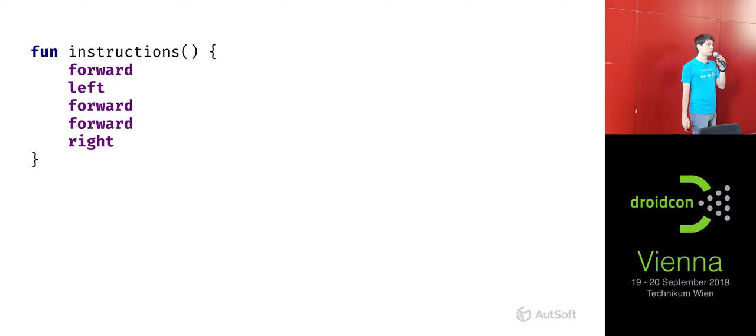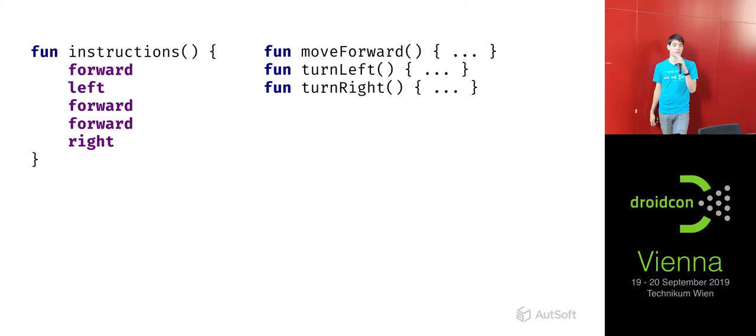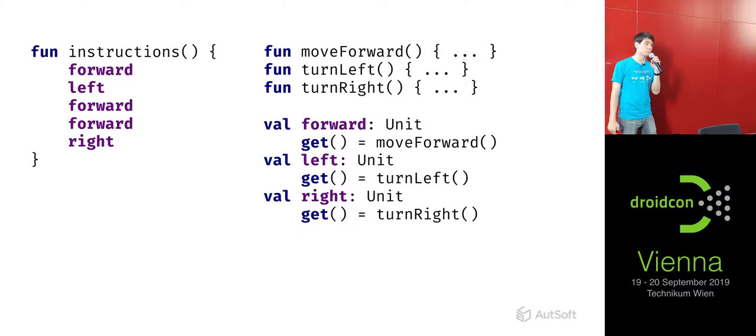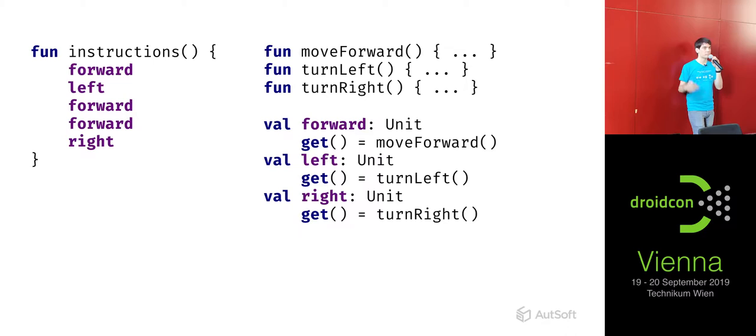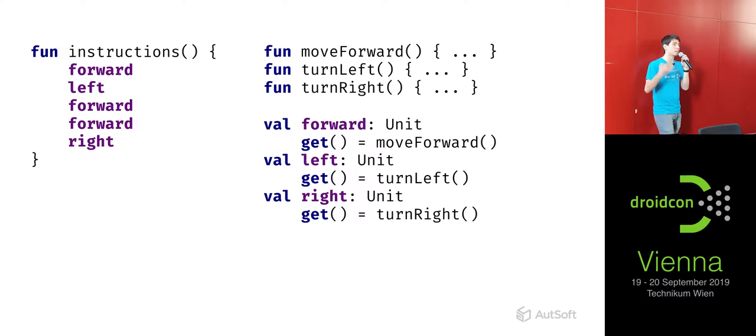So with that, if we go back to the code we are trying to implement — let's say we have our original functions performing some functionality and we introduce some new properties, all of which are going to return unit. They have this meaningless return value that we're not going to use. However, if we write down the name of these properties, their values will be read, which means their getters will execute and we can just call the original functions inside those getters. So we've achieved this new syntax.